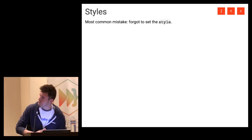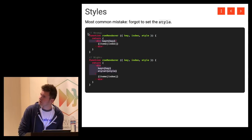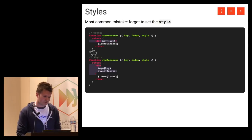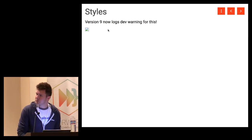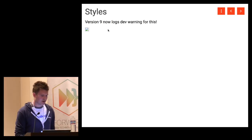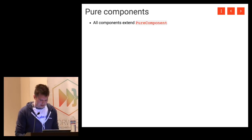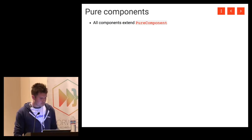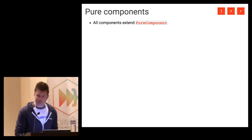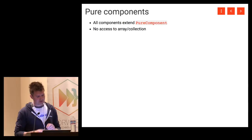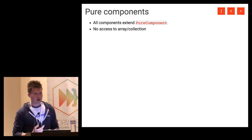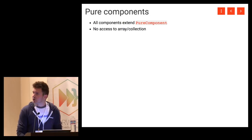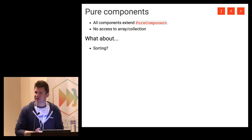Here are common mistakes for people using React Virtualize. The biggest mistake is forgetting the style. A common Stack Overflow question is 'why doesn't this work?' — and the reason is forgetting to include the style object, which is what positions the rows. I added a dev warning in version 9 that prints a nice console warning if you forget to position your element. Another thing: React Virtualize components are subclasses of PureComponent, which means they only re-render if their properties change, but they don't have access to your application data — just the number of rows and a renderer.